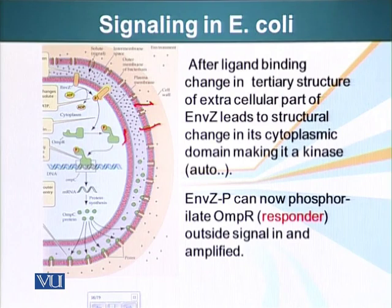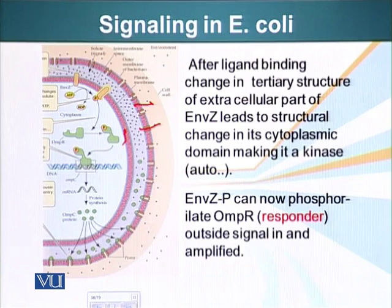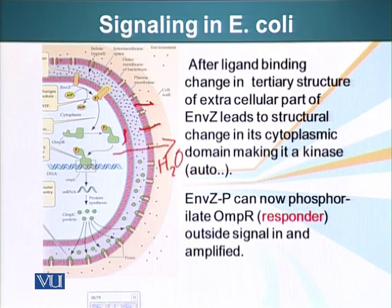When the bacteria is in an environment where there is low solute concentration — for example, a person has been fasting — the concentration of solute molecules is low in the intramembranous space. But suddenly if a person eats a heavy juicy meal, the concentration of solute molecules will suddenly increase in the environment of this bacteria, and in this situation, where there is a hypertonic solution outside the cell, the water will move outside. So this bacteria will start losing water very rapidly if the situation is not handled.